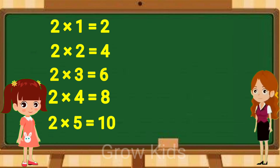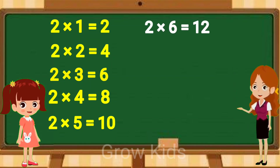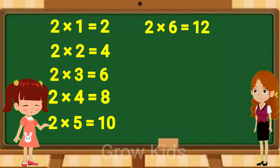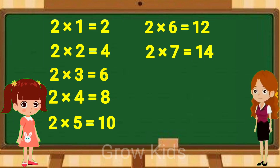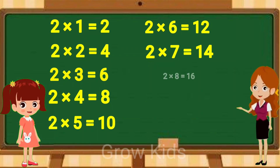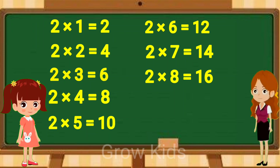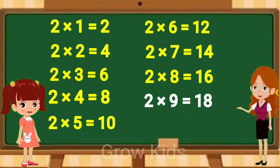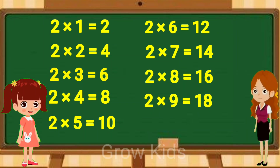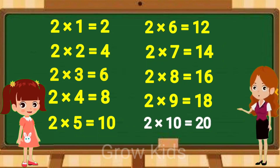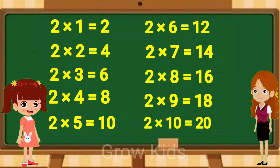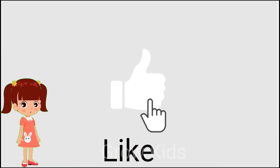Two sixes are twelve. Two sevens are fourteen. Two eights are sixteen. Two nines are eighteen. Two tens are twenty.